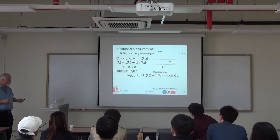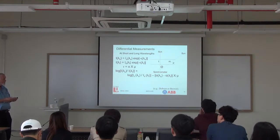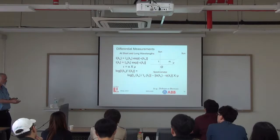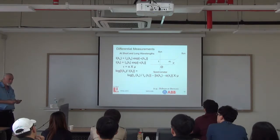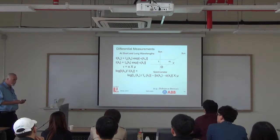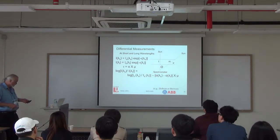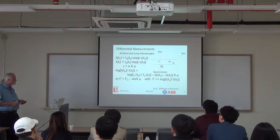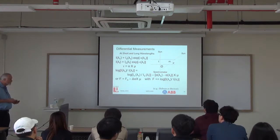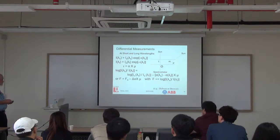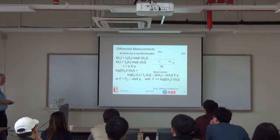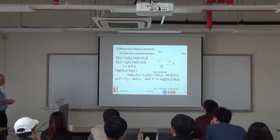The absorption function and the log of the ratio of the two intensities let us write the equation in a fairly simple form. The quantity measured at any point in time equals what would be measured with no ozone—the extraterrestrial constant—attenuated by the ozone absorption, where delta alpha is the differential absorption coefficient.